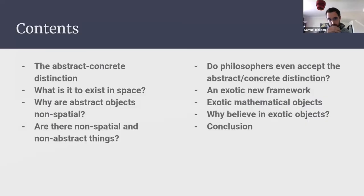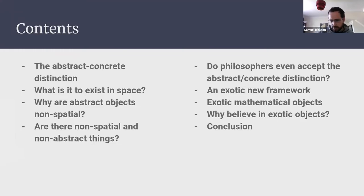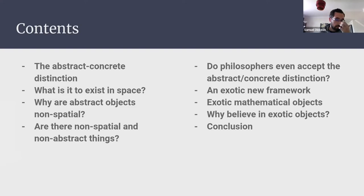Here's what I'll go through. We've talked a lot about the abstract/concrete distinction today, so I'll go over that briefly. Part of what common definitions of concrete seem to include is that something exists in space, but it's not always clear what we mean by that. I'll talk about what that means and reinforce it by discussing why we take purported abstract objects to be non-spatial.